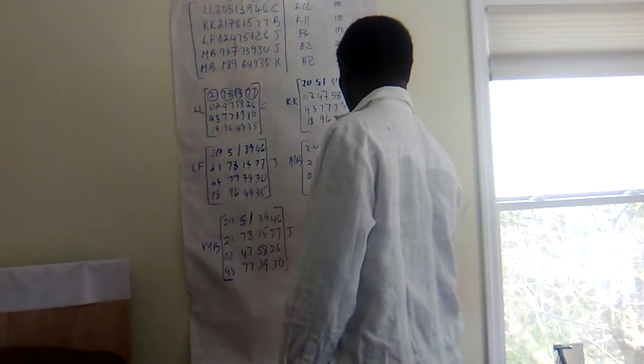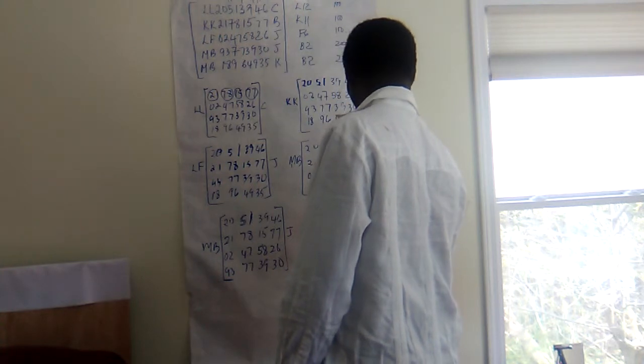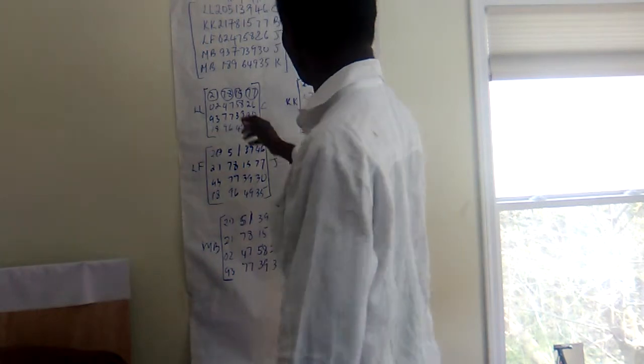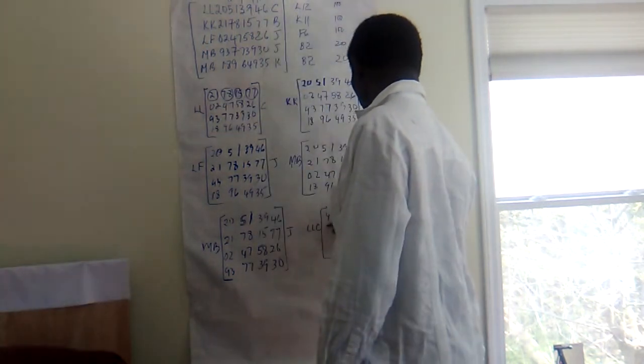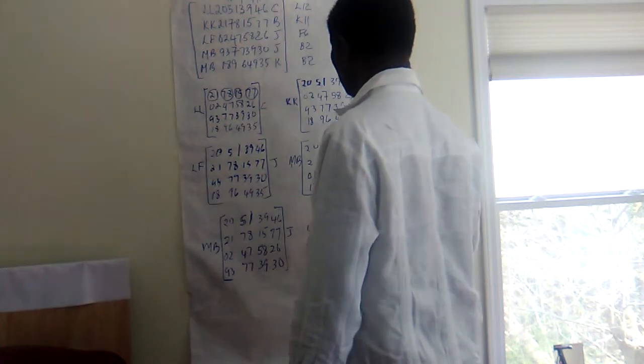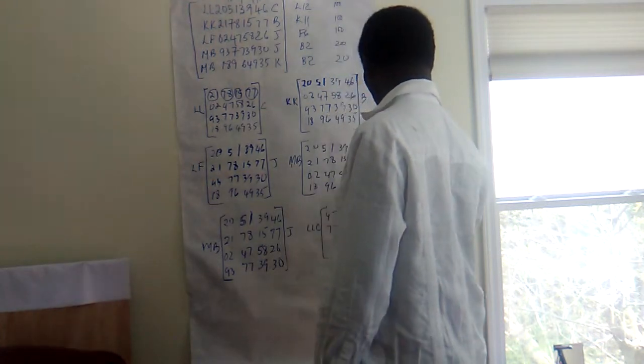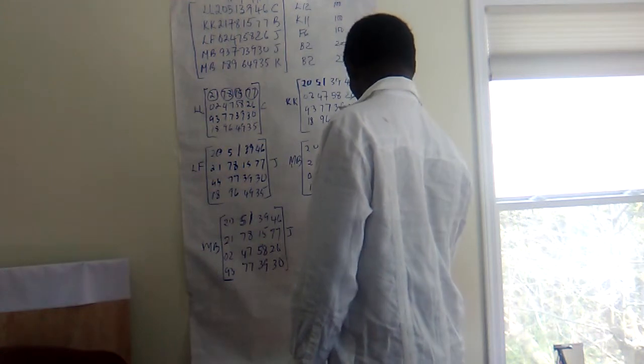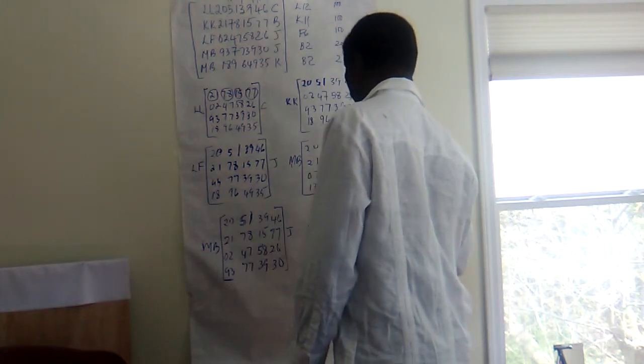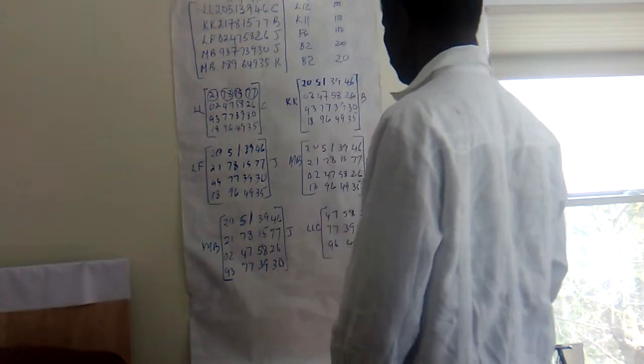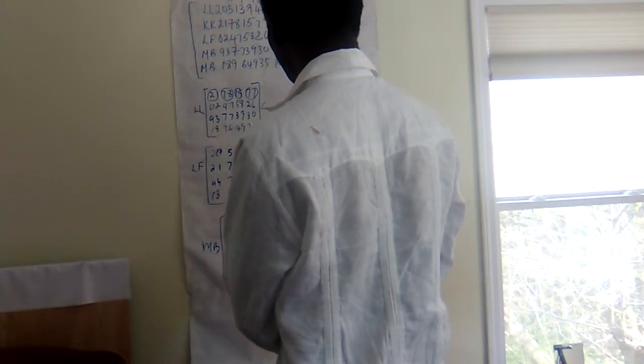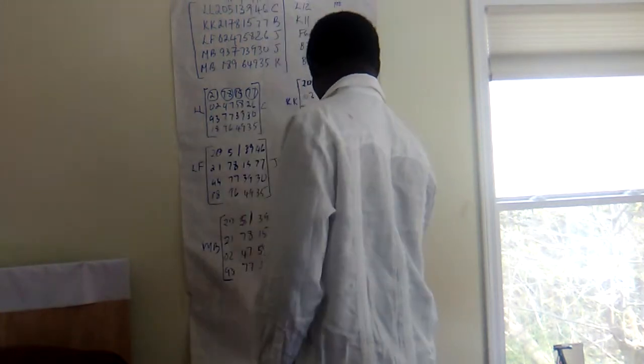So we have now 47, 58, 26, 3 by 3, period. 47, 39, 30, and 96, 49, 35. And this should be LL C 21.